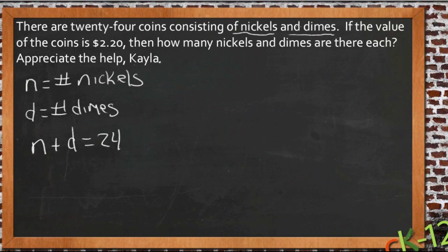Then we also know that the value of the coins is $2.20. Now this is where you have to pay attention, because this is where these things can get a little bit tricky if you don't point out for yourself very clearly that your variables represent the number of each coin.